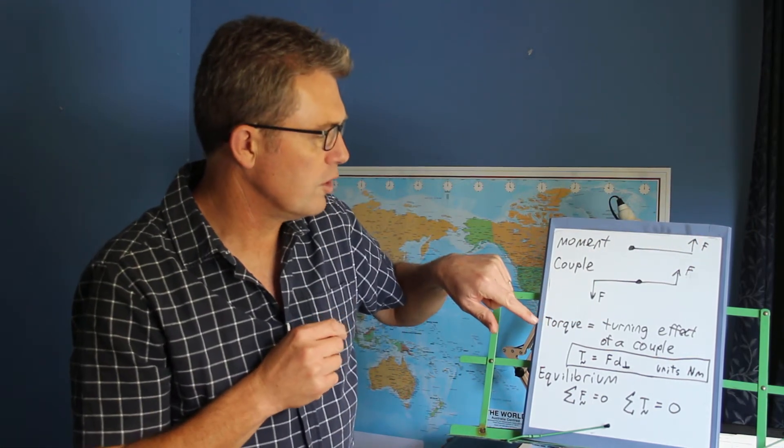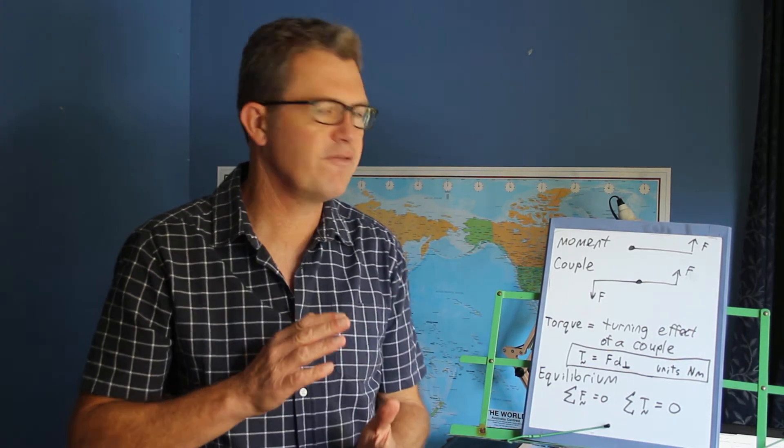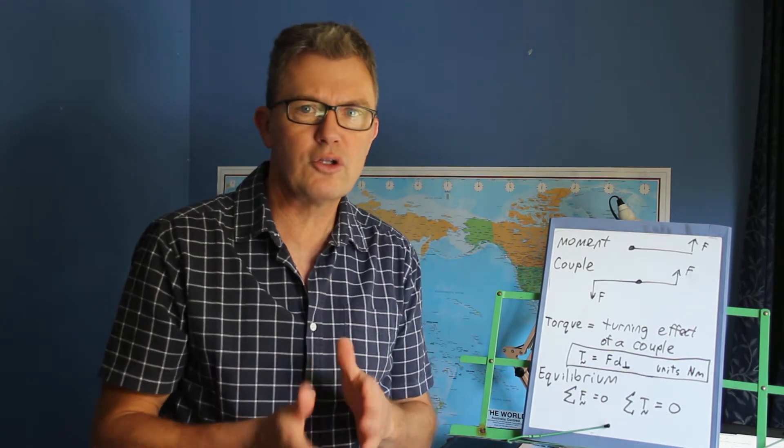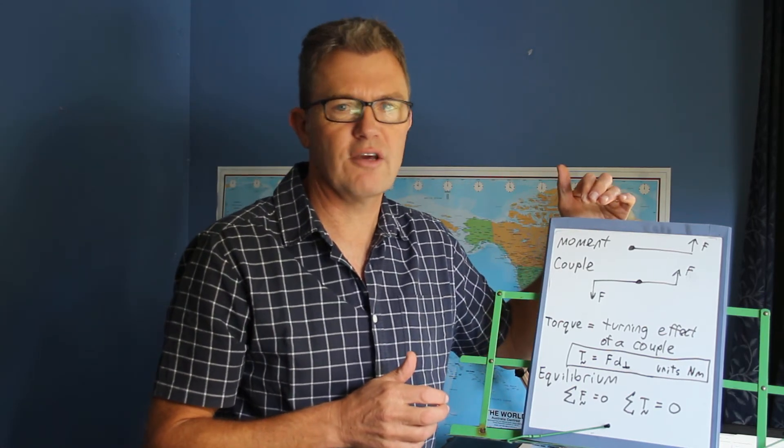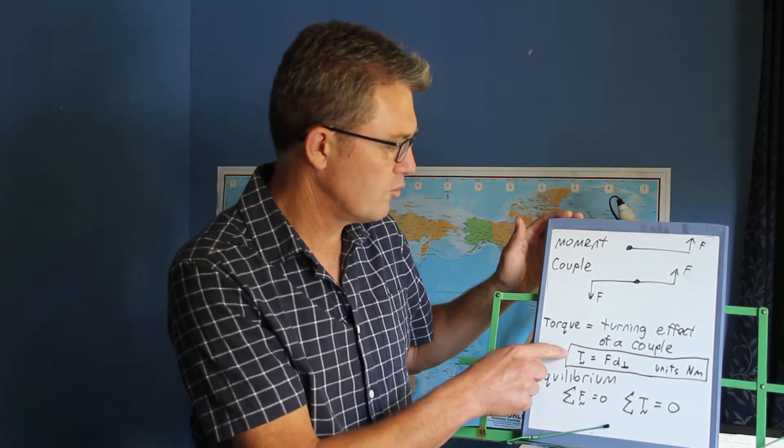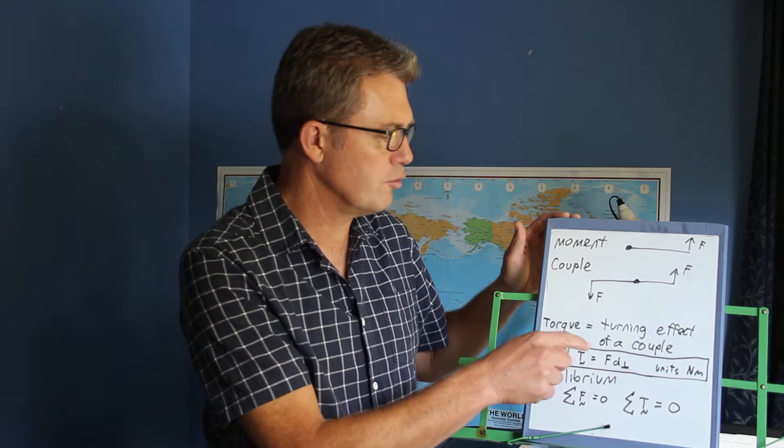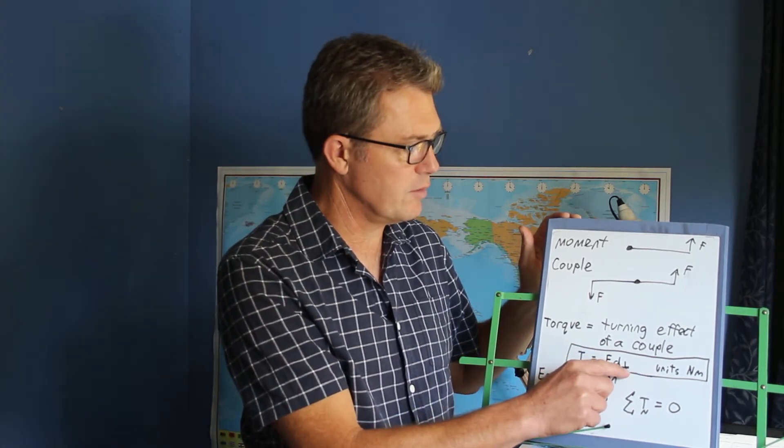We talked about torque before. Torque, technically, it's the turning effect of a couple. But the word torque can be used in the same way that you use the word moment, the turning effect of a force. Now as an equation, as a formula, torque, which is a vector, the turning effect of a spanner equals force times distance. And that little sign here means perpendicular.